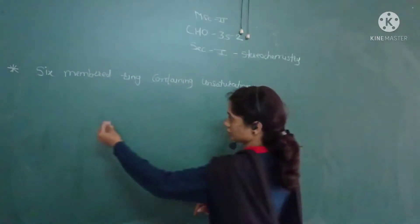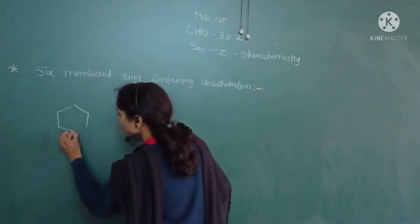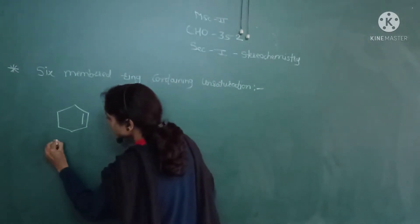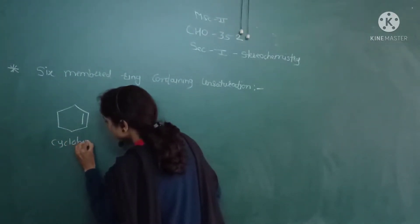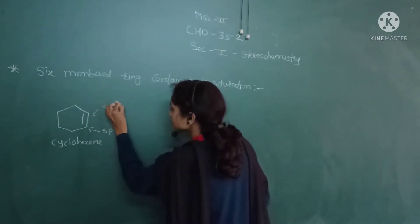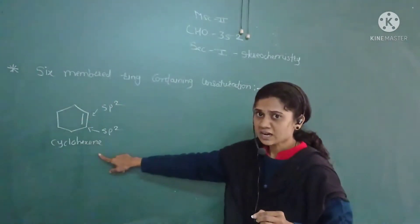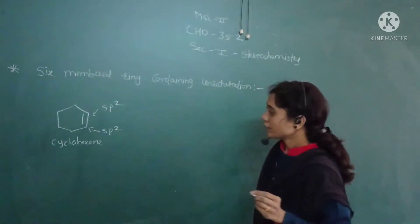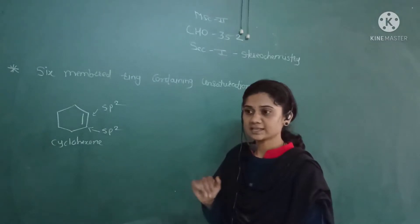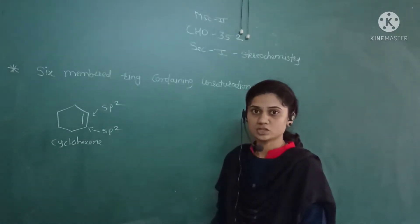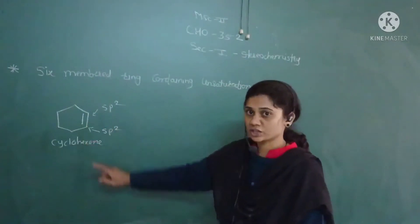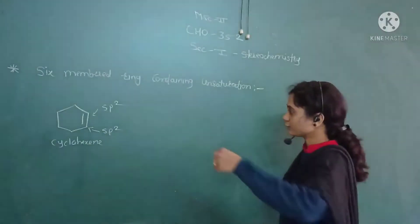Taking the example of cyclohexene: this six-membered cyclic ring contains one carbon-carbon double bond, hence both carbons at that bond are sp2 hybridized. As we know, cyclohexane in the chair conformation is the most stable conformation, but in cyclohexene, where there is one unsaturation, the chair conformation is no longer stable.